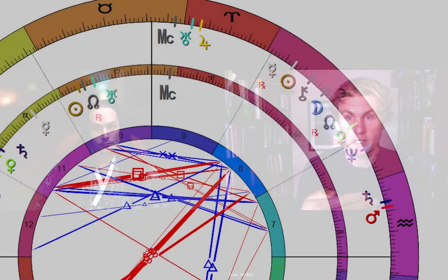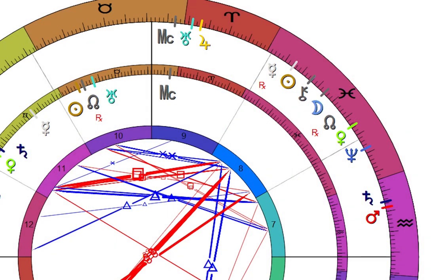Transits are a more familiar way of doing predictions. We essentially do a biwheel chart — the natal chart on the inside and the current planetary positions on the outside — and that allows us to see where the planets fall in the houses of someone's chart. So we can see what house this eclipse falls in and what aspects it makes to Donald Trump's natal positions.